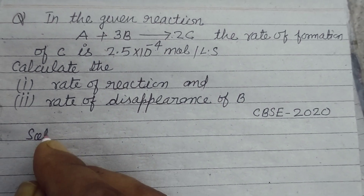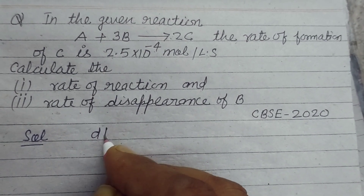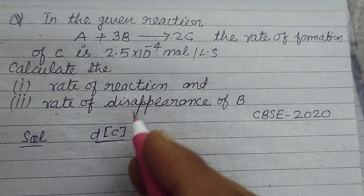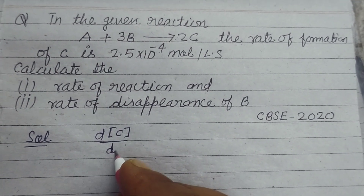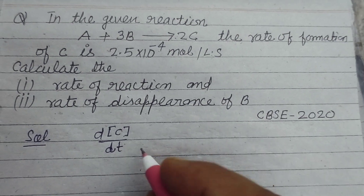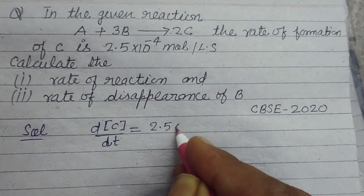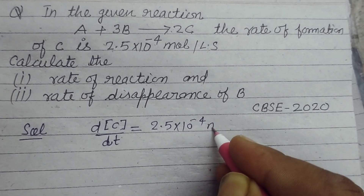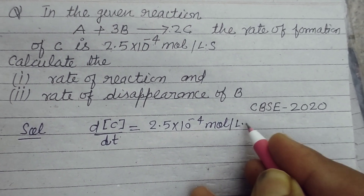So students, the rate of formation of C is given. The concentration change dc/dt is equal to 2.5×10⁻⁴ mole per liter per second.